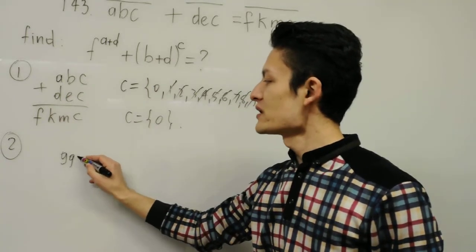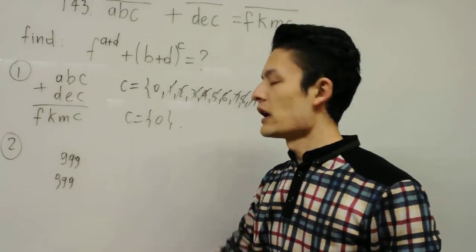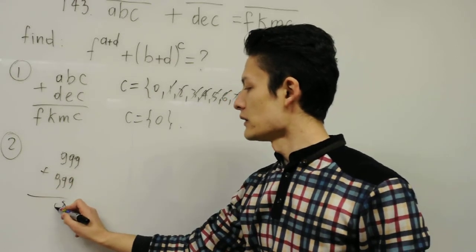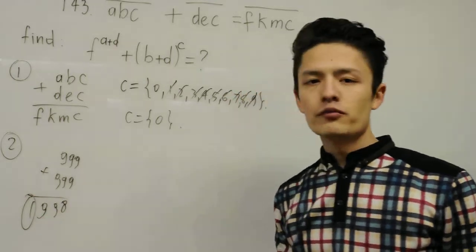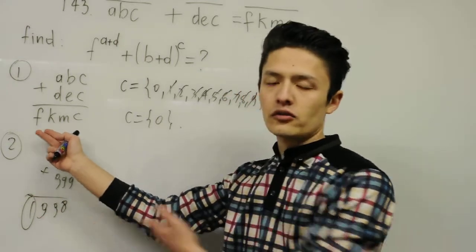So let's say three-digit number maximum is 999, and then another maximum can be, for example, 999. If you add this, you have 8, 9, 9, and 1, right? The maximum possibility for F is equal to 1. So it's only 1.